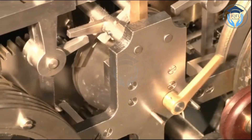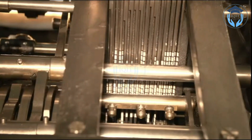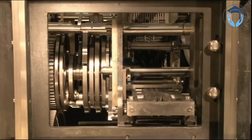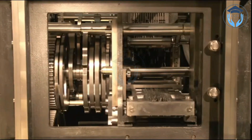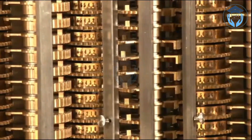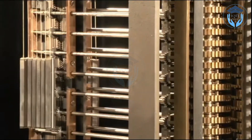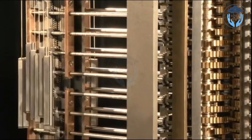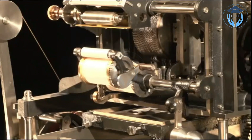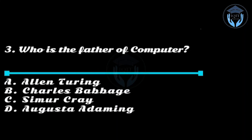Babbage developed the concept of a programmable mechanical calculator and designed several early computing devices, including the difference engine and the analytical engine. The difference engine was designed to automatically compute and print mathematical tables using a complex series of gears and mechanical components. Although Babbage was never able to build a working prototype during his lifetime, his designs were highly influential in the development of modern computing.